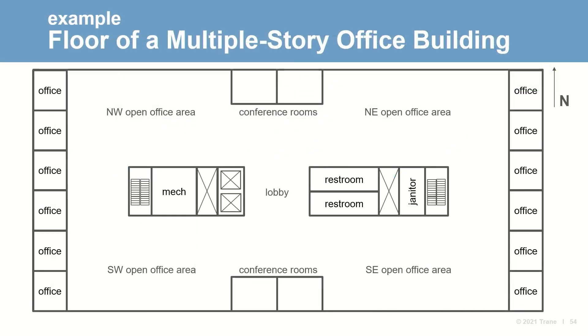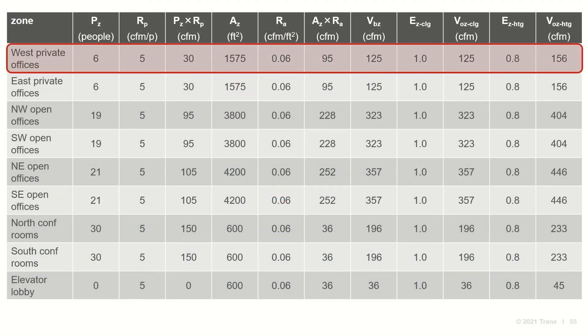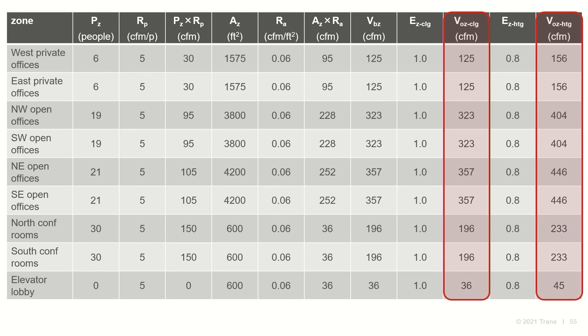To demonstrate the procedures for calculating system level intake flow, we'll use the example office floor plate introduced earlier. For each of the three configurations, the system calculations build off the exact same zone calculations. This table includes the zone outdoor air flows calculated for all zones, with the breathing zone air flows V-sub-BZ and the zone outdoor air flows V-sub-OZ, whether the system is delivering cool air or hot air for heating.